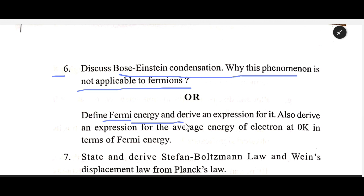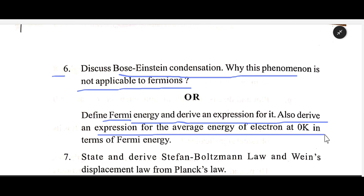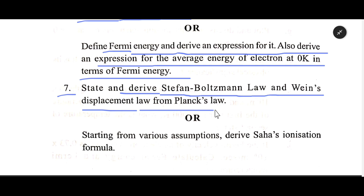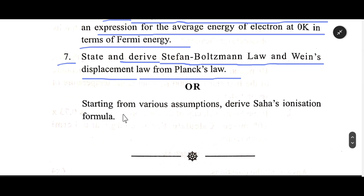Number Six: Discuss Bose-Einstein condensation and explain why this phenomenon is not applicable to fermions. Define Fermi energy and derive an expression for it. Also derive an expression for the average energy of electrons at 0 K in terms of Fermi energy. Number Seven: State and derive Stefan-Boltzmann's law and Wien's displacement law from Planck's law, starting from various assumptions, and derive Planck's radiation formula.